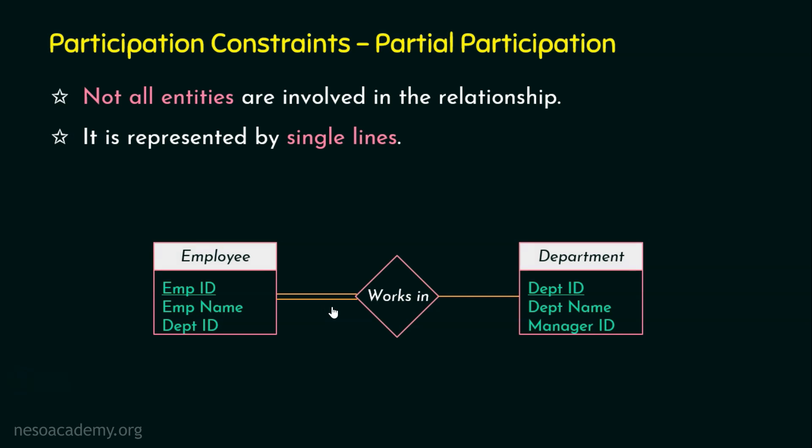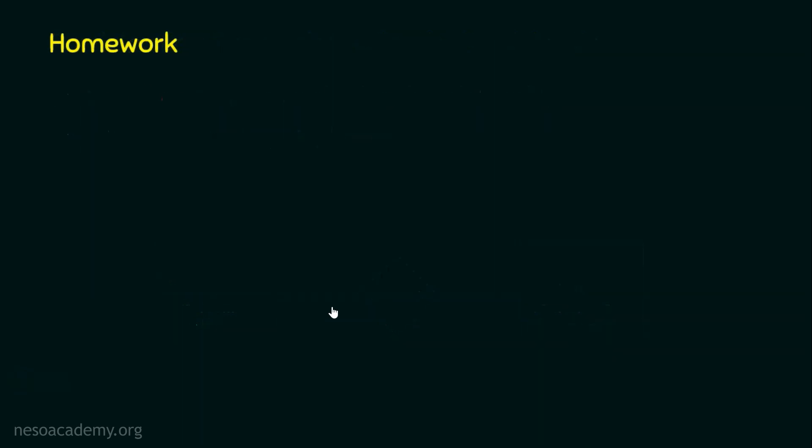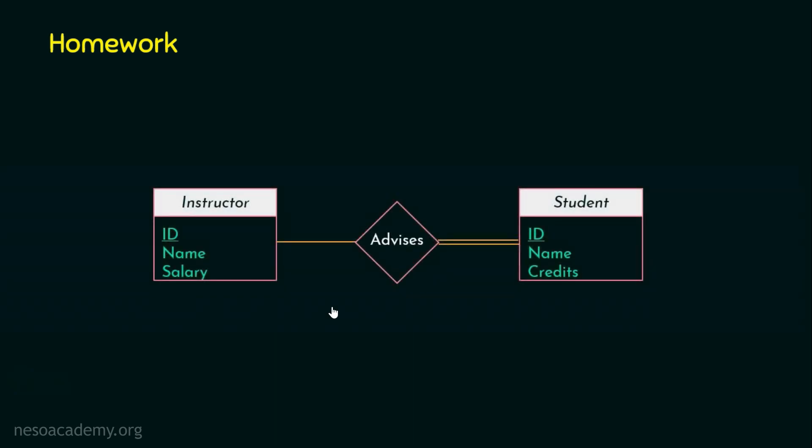Let me give another example using student and instructor entities. We expect every student entity to be related with at least one instructor through the advisor relationship — every student will have an advisor, who is an instructor. This is an example of total participation for students. However, not all instructors are advisors; some instructors teach but may not have taken the responsibility of an advisor. So student has total participation, but instructors have partial participation on the advisor relationship.